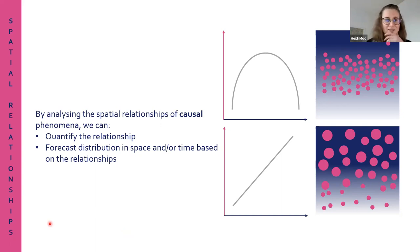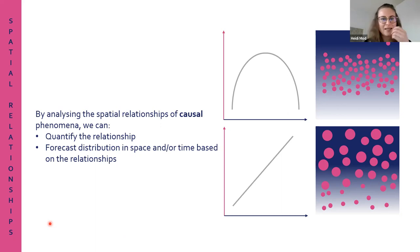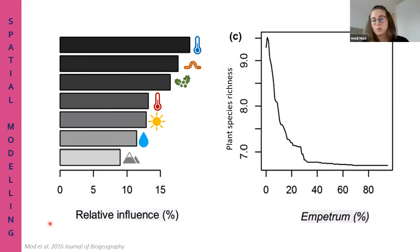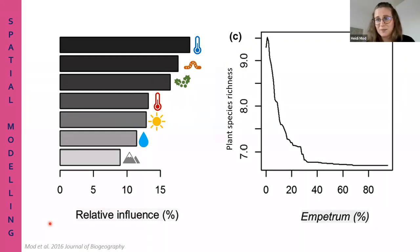Once we have quantified these relationships, we can forecast the distribution in space or in time. That is, in a nutshell, what we can do with spatial modeling. Here are just a few examples of what one can get out from spatial modeling or different types of spatial modeling.